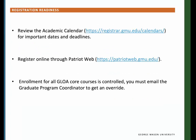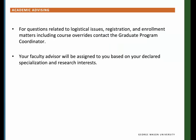Registration Readiness. It is very important that you take a look at the academic calendar each semester. Most of you have already registered online through PatriotWeb for your courses. Enrollment for all Global Affairs core courses is controlled so that everyone who needs a spot in that class is accommodated. Each semester, I will need to know if you will be a full-time or part-time student and which classes you hope to complete the following semester so I can provide you with a registration override. For questions related to logistic issues, registration, enrollment matters, and course overrides, feel free to email me at globama.gmu.edu. Your faculty advisor will be assigned based on your declared specialization and research interests later in the semester.